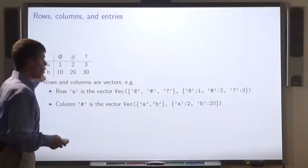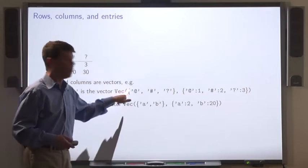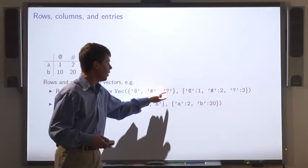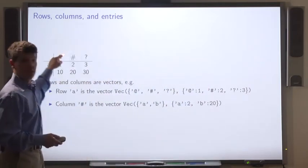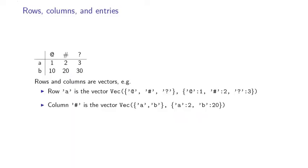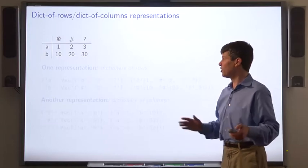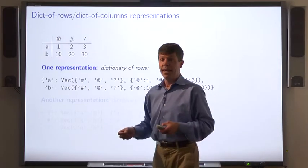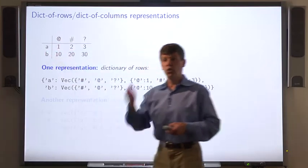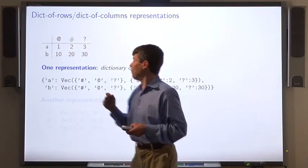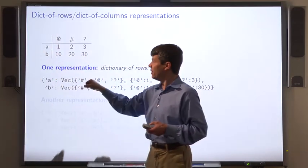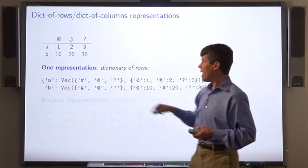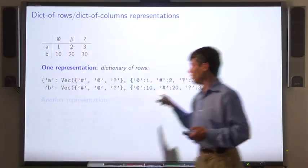And we can represent this by a dictionary. For this matrix, the row labeled by A is the vector with domain at, sharp, and question mark, mapping at to 1, sharp to 2, and so on. And the column labeled by sharp is the vector with domain A and B, mapping A to 2 and B to 20. Here's one representation for a matrix as a dictionary of rows. It maps each of the row labels to a vector that is that row. So in this dictionary, the row label A maps to the vector 1, 2, 3, and maps B to the vector 10, 20, 30.